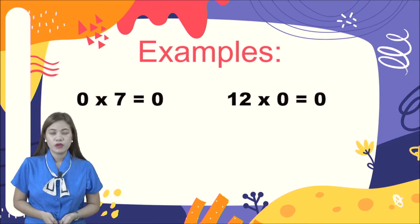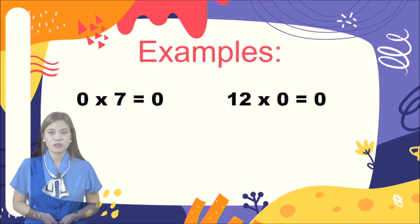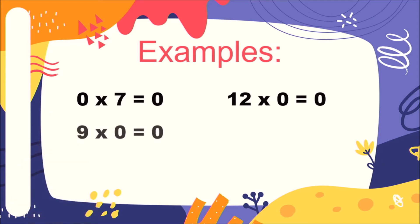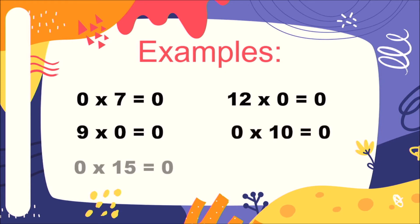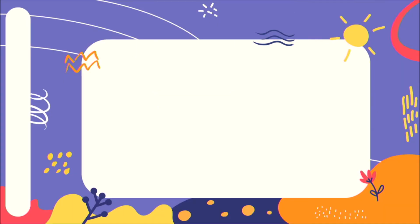Zero times seven is equal to zero. Twelve times zero is equal to zero. Nine times zero is equal to zero. Zero times ten is equal to zero. Zero times fifteen is equal to zero. Eight times zero is equal to zero. Did you understand, kids? It's very easy!